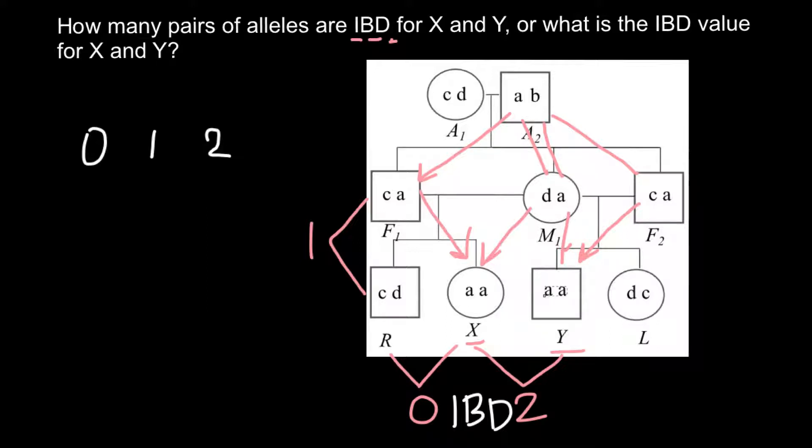But if, for example, this individual here wouldn't be a son of this individual and would have this A allele, we wouldn't be sure anymore that one of these alleles are identical by descent, because this individual wouldn't be related to this one. So in this case, we would have to change identical by descent (IBD) to identical by state. We would say that this individual would be identical by state.